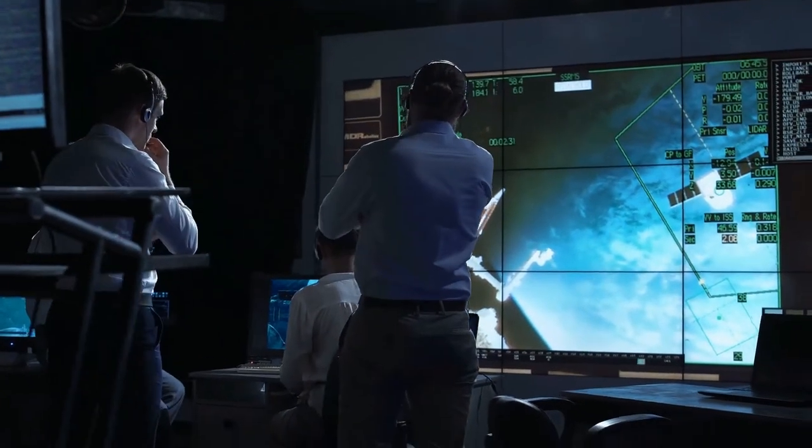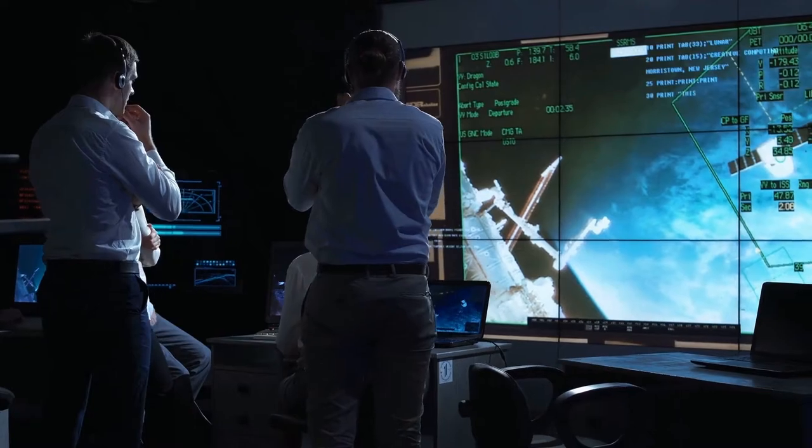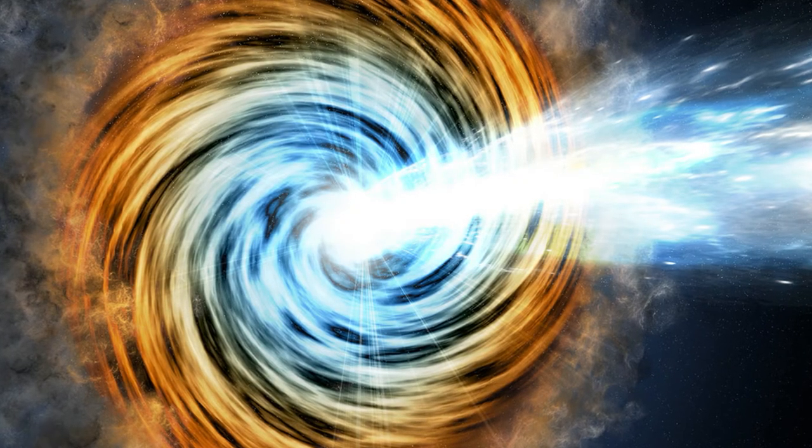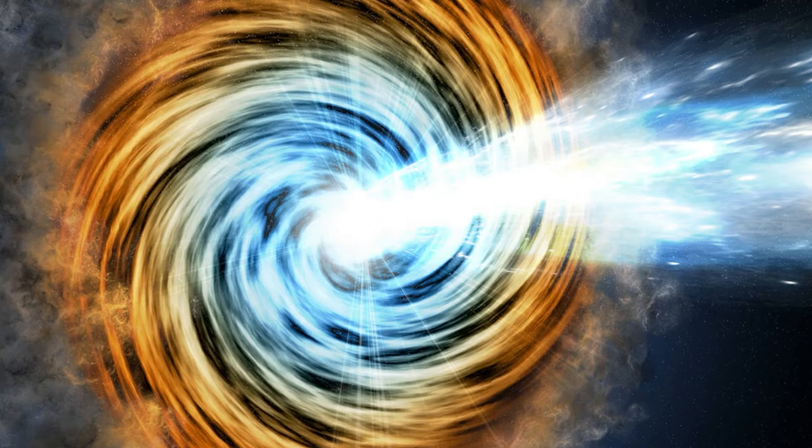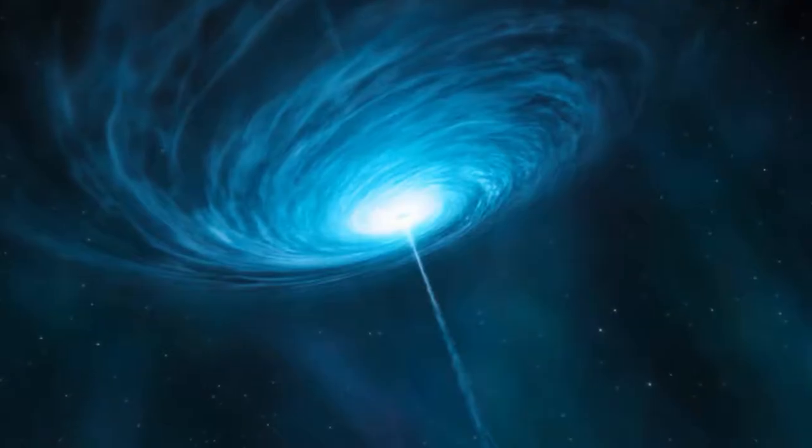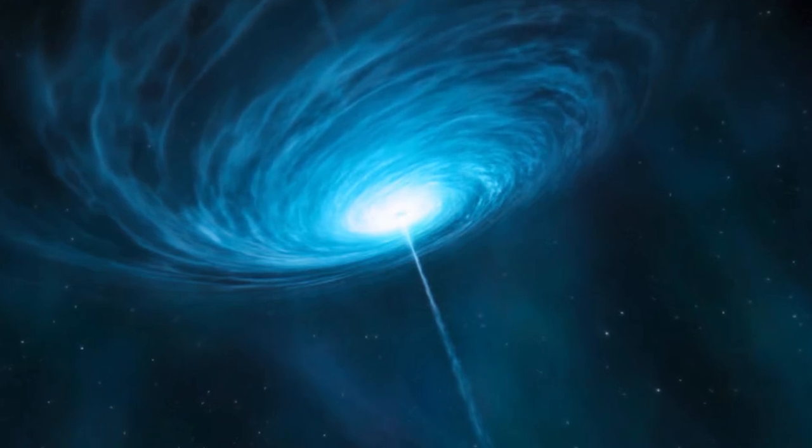The Caltech-led team of astronomers has discovered evidence of this scenario taking place within a fiercely energetic object known as a quasar. Quasars are active cores of galaxies in which a supermassive black hole is siphoning material from a disk encircling it. In some quasars, the supermassive black hole creates a jet that shoots out at near the speed of light.